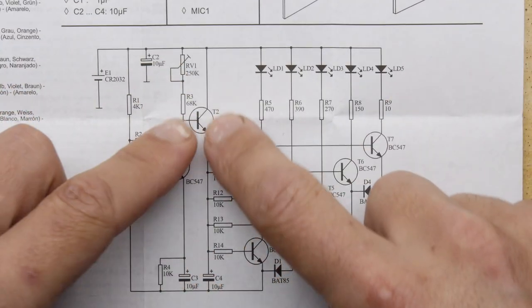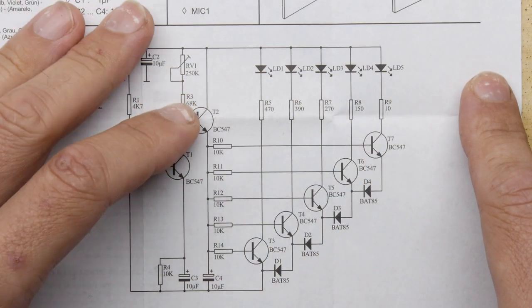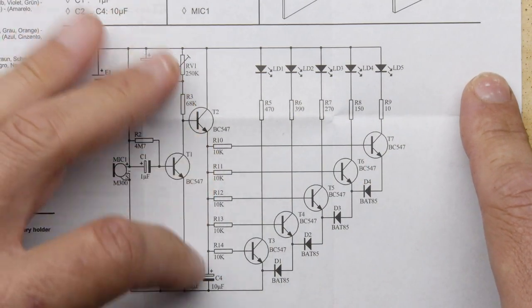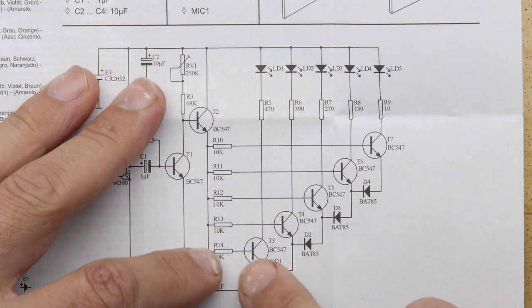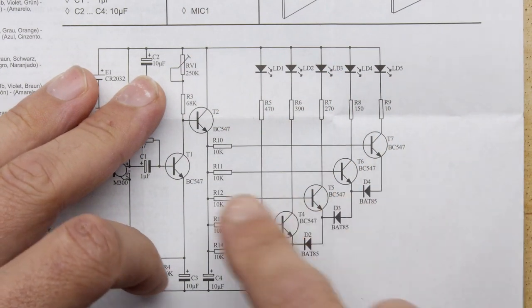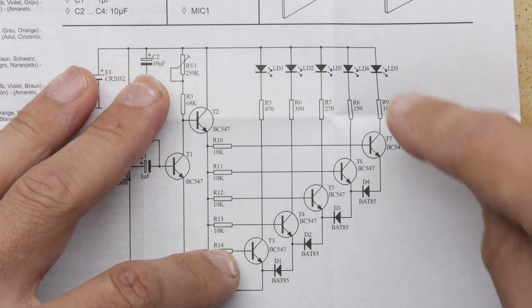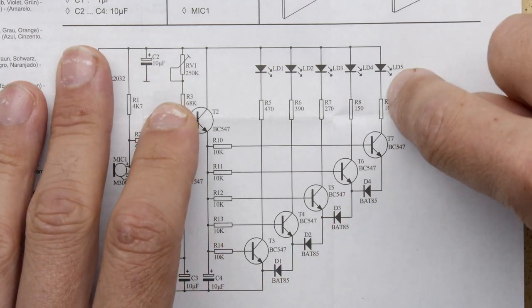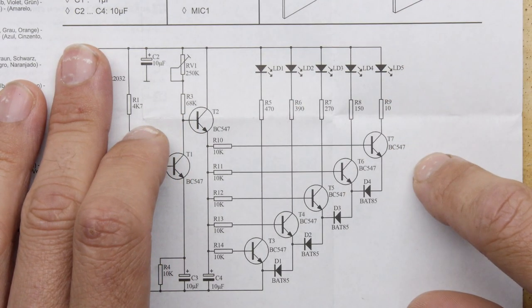And based on that, it's going through this resistor ladder, effectively. And you can see 10k, 10k, 10k, 10k. And as the voltage goes up and down, it will start to incrementally or decrementally trigger the bases of these transistors. And those transistors will be pulling down on the LEDs and then illuminating them. So that's cool.